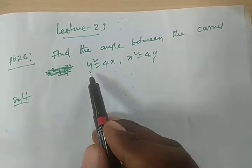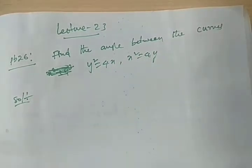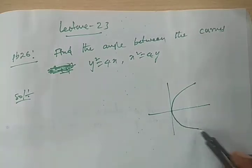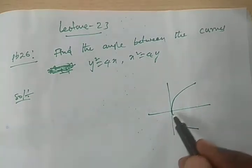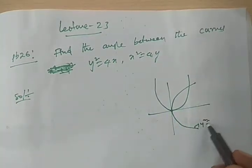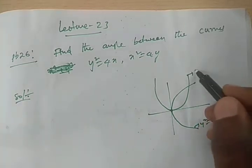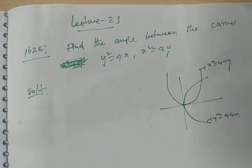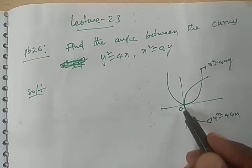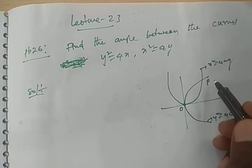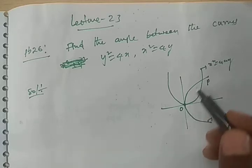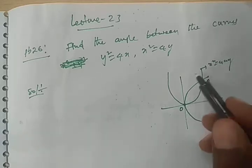Find the angle between the curves y² = 4x and x² = 4y. The model graph of y² = 4x and x² = 4ay are shown. You can observe there are two common points — the origin is one of them, and let us call the other one P. First of all, we will find the common points, meaning the points of intersection of the given curves.